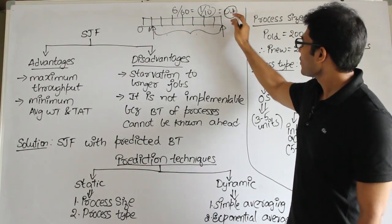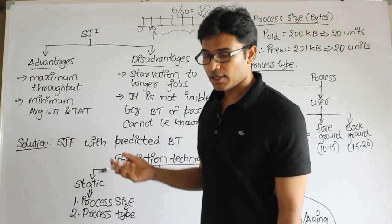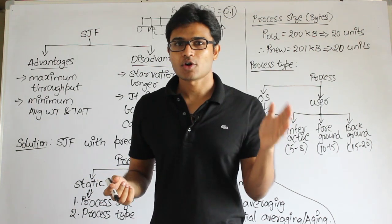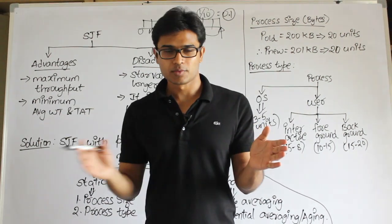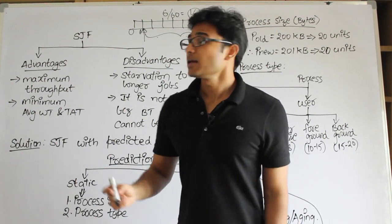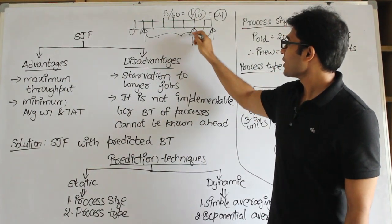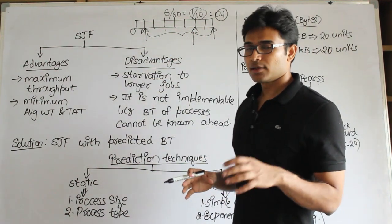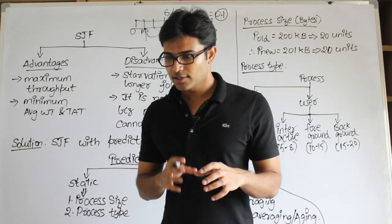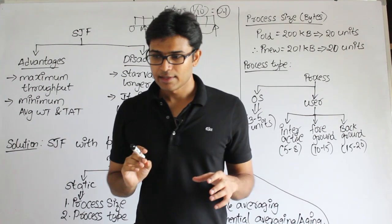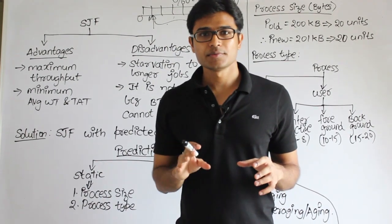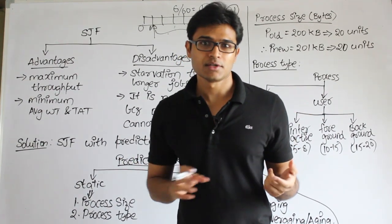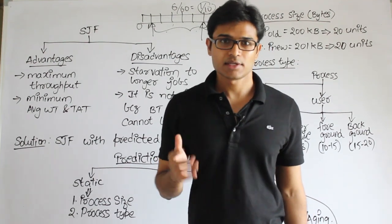The overall throughput of every scheduling algorithm will be the same in the end, but with SJF, at any point in time if you stop the schedule and count the throughput, it gives you the best value. Many processes will get completed as early as possible. The reason is we are finishing as many jobs as early as possible by always taking the shortest burst times.